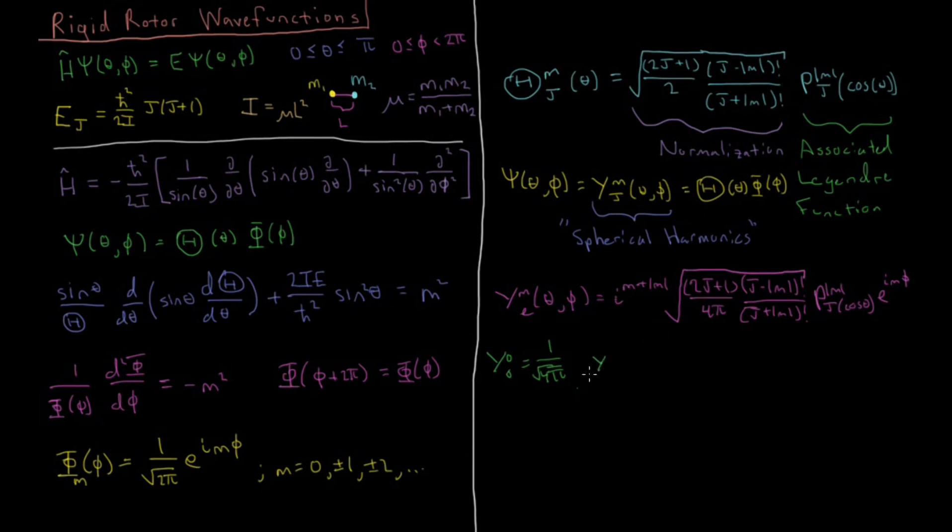And then if we look at j equals 1, m equals 0, sometimes j is also called l. So if you ever see j or l in this type of function or in the spherical harmonics, that's just the same thing. Some people use j, some people use l. I'm just going to use j.